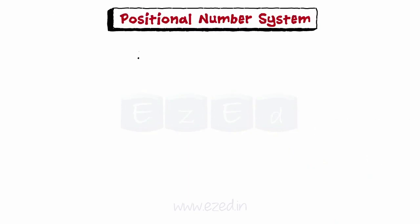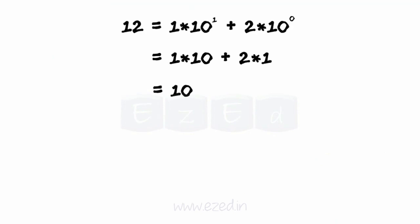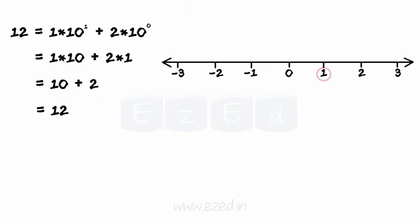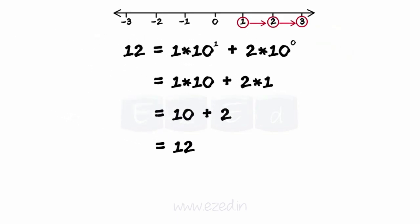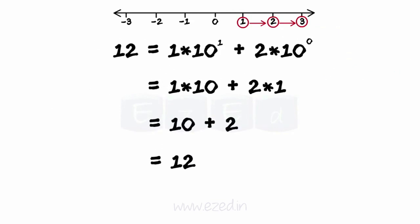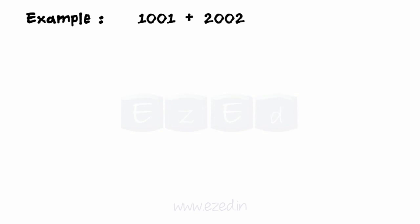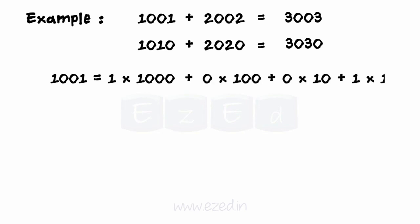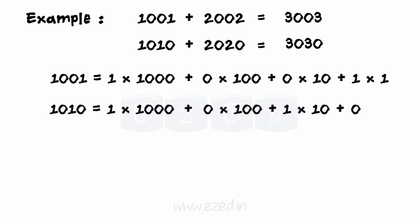A positional notation numeral system is one in which each position is related to the next by a constant multiplier of that numeral system. For each position that the number is in, that system has a relative symbol or meaning and relates to the number directly next to it. The total value of a positional number is the total of the resultant values of all positions. For example, 1001 plus 2002 and 1010 plus 2020 will give two different answers even if the digits used are the same, since the position of the digits cannot be changed.